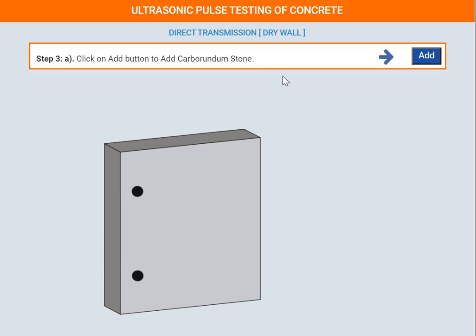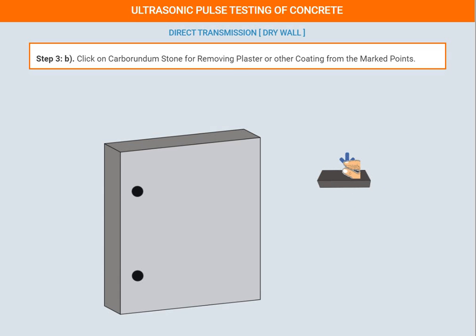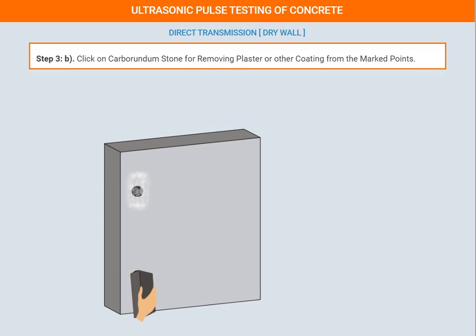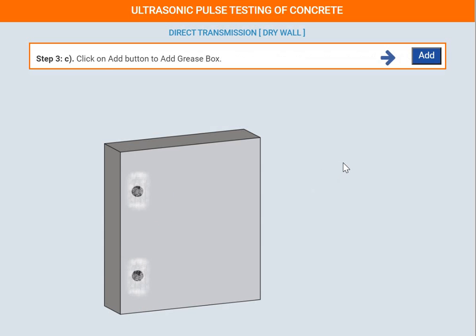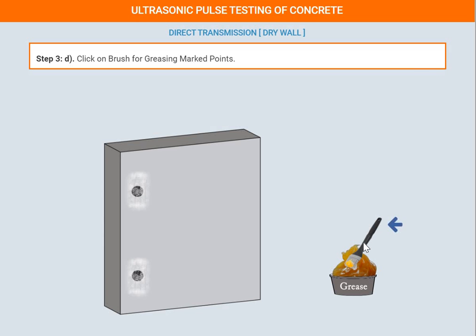Click the next button and then the add button. We use the carborundum stone to remove the plaster, then click add again. Now we apply grease on top of the marked areas — the marked points A and B.